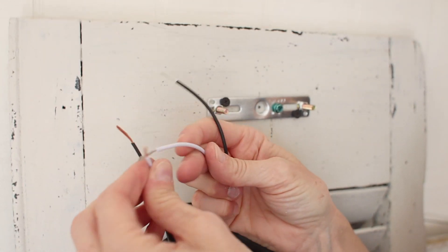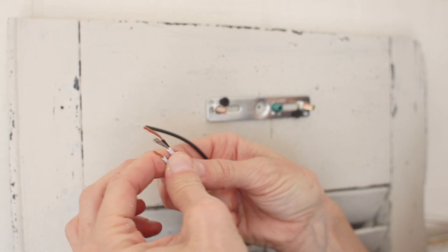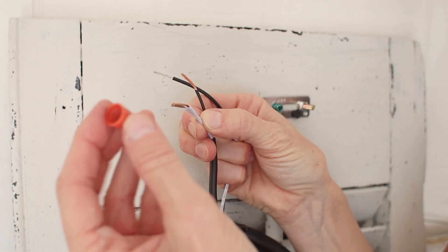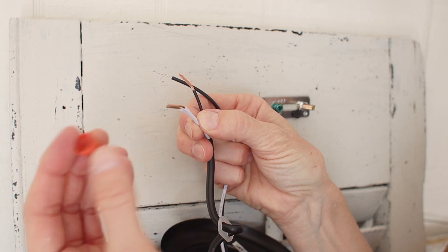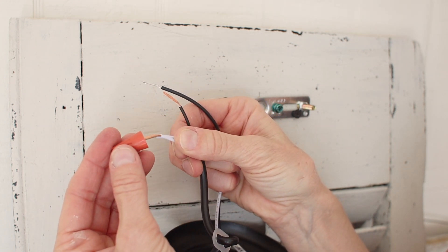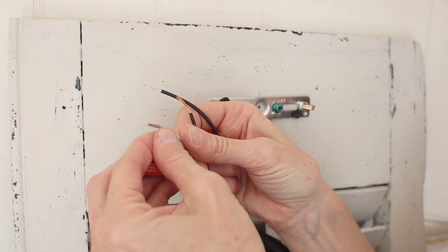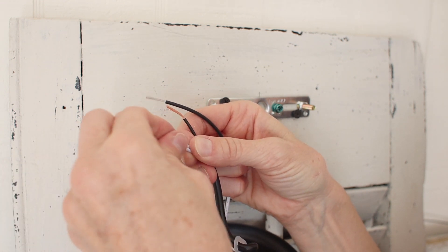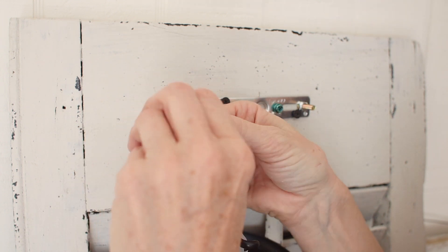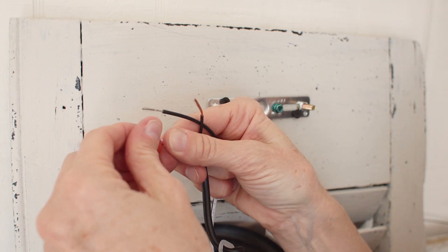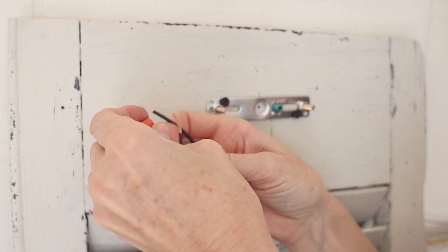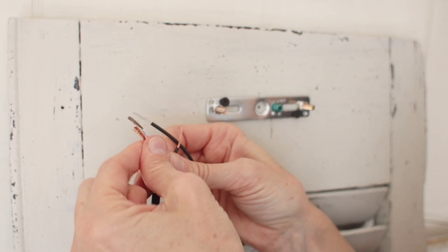Take the white and hold them, get one of these wire nuts. Basically you put the wires in there and then you twist and it seals them together and gives it a nice bit of safety so that the wires are not exposed.